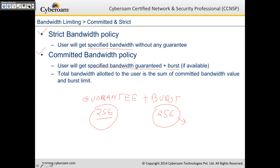A good example of when you need more bandwidth: you've started a video conference and are getting 256 kbps. When you add three more users to that call, you'll require more bandwidth and draw from the burstable limit of 256 kbps — but only if that bandwidth is available at that point for that particular user. These are the two different bandwidth policies CyberROM offers.